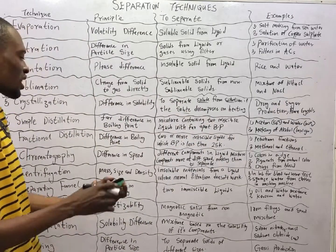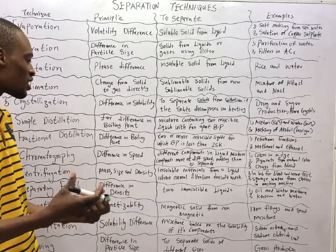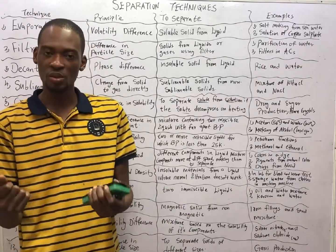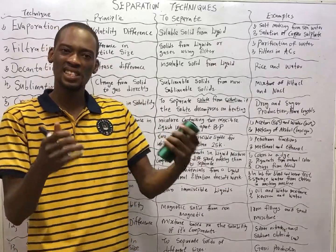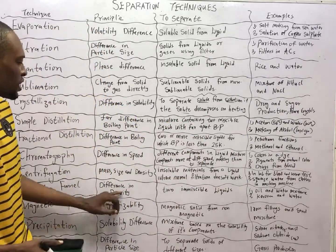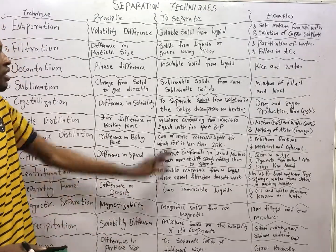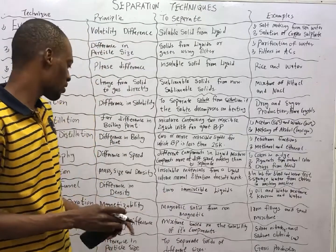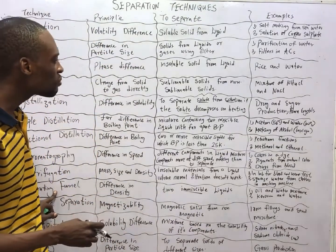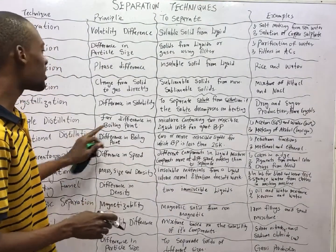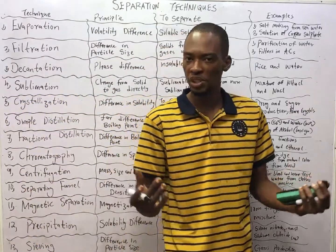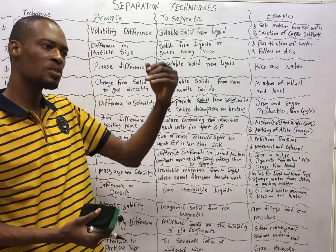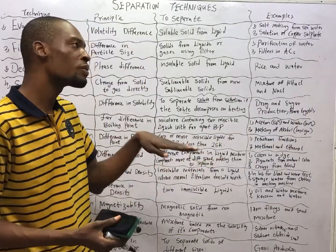Separating funnel works based on the principle of difference in density. Density is mass per unit volume. For example, blood is thicker than water, or engine oil is denser than water. Separating funnel is used to separate two immiscible liquids — liquids that cannot mix. Examples: oil and water, and kerosene and water. Note that in distillation you have miscible liquids, while in separating funnel you have immiscible liquids.